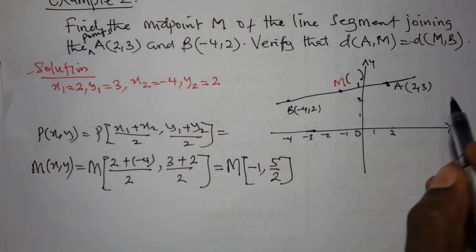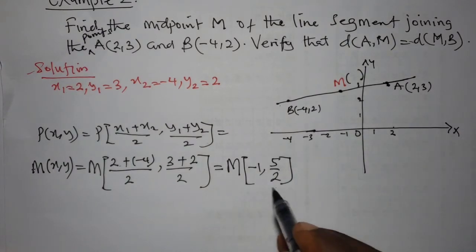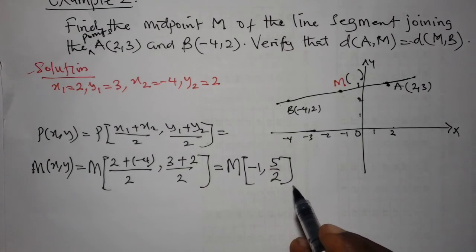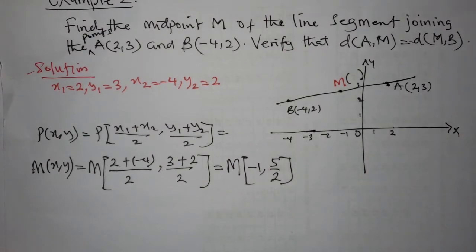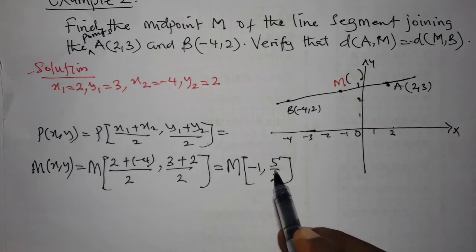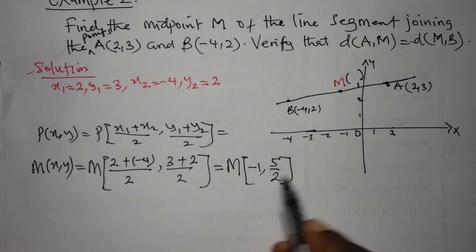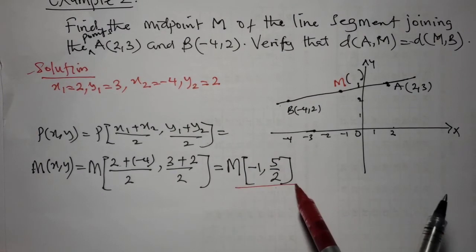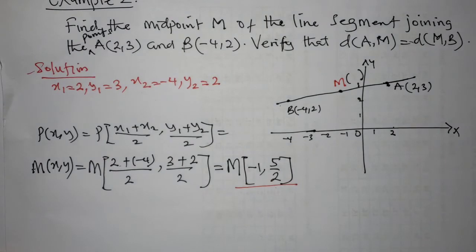So the midpoint M of the line segment from A to B has coordinates (-1, 5/2). This answers the first part of the question: find the midpoint of the line segment.